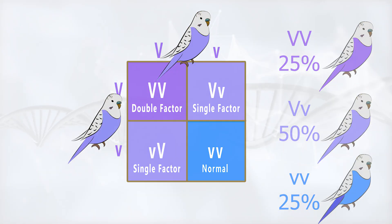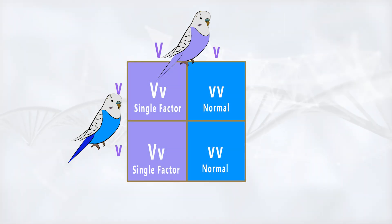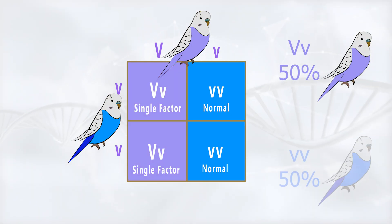Let's take another example of Punnett square where one parent has a single factor violet and the other parent doesn't have the violet gene at all. We can see in that case that 50% of the chicks will be single factor violet and 50% won't have the violet gene at all.